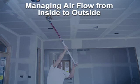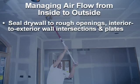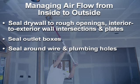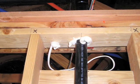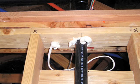To manage the air and vapor flow from the inside to the outside, you can seal the drywall, seal the outlet boxes, foam the wire and plumbing holes, and seal all penetrations between the living space and the unconditioned space. Using spray foam insulation to seal these holes not only provides insulative benefits, but also acts as a barrier to air, heat, and moisture flow.